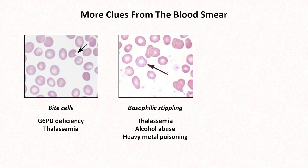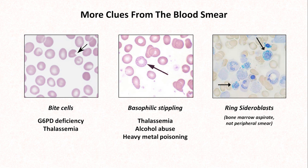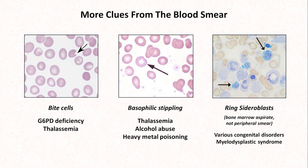Last is a finding not seen on a peripheral smear, but rather on a bone marrow aspirate. These are ring sideroblasts, which are immature nucleus-containing red blood cell precursors in which iron-containing granules surround the nucleus. This is seen in various congenital disorders, myelodysplastic syndrome, the use of the antituberculosis drug isoniazid — which can lead to a functional deficiency of vitamin B6 — alcohol abuse, and copper deficiency.